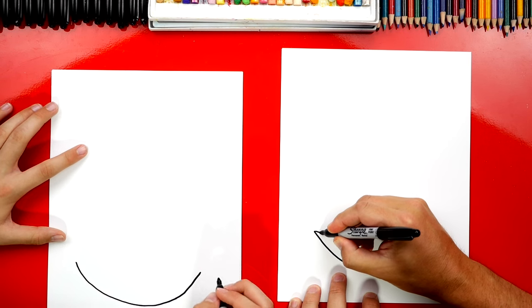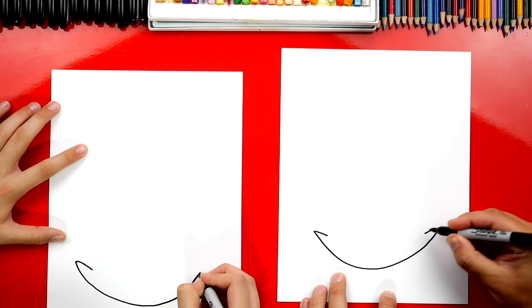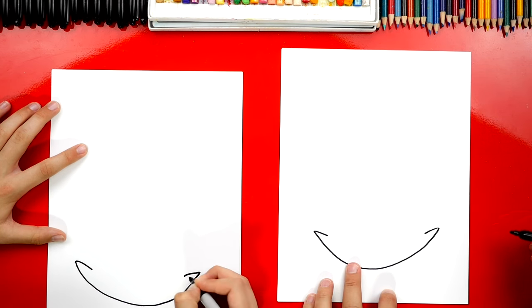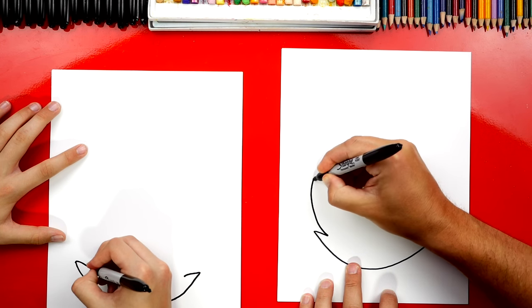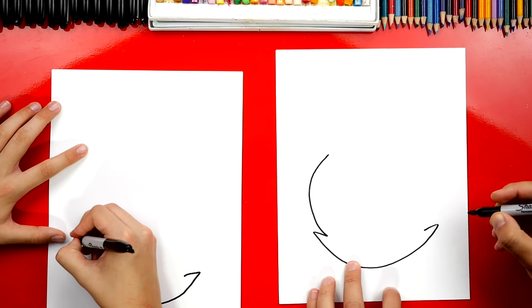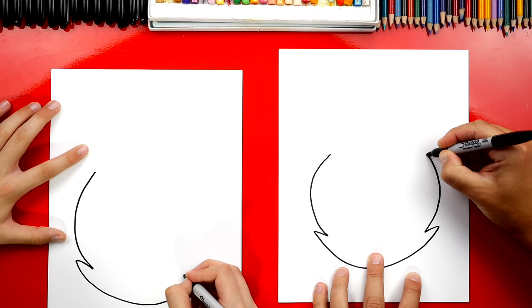Now on both sides, we're going to draw a short line that comes in on the left and also on the right. Then we're going to curve back up on the left side. And we're going to repeat that same line or curve on the other side.